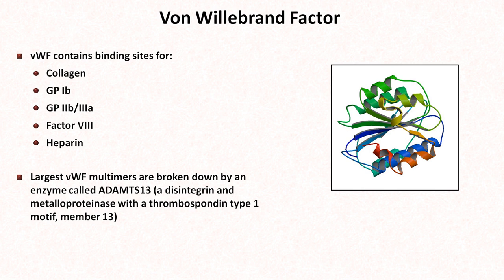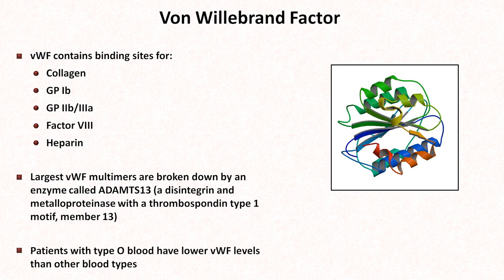TTP will be discussed in a later video. Interestingly, patients with type O blood have lower levels of von Willebrand factor compared to other blood types, which may be related to observations that type O blood patients may be slightly more prone to bleeding complications, while patients with non-O blood groups may have slightly higher rates of heart disease and venous thromboembolism.